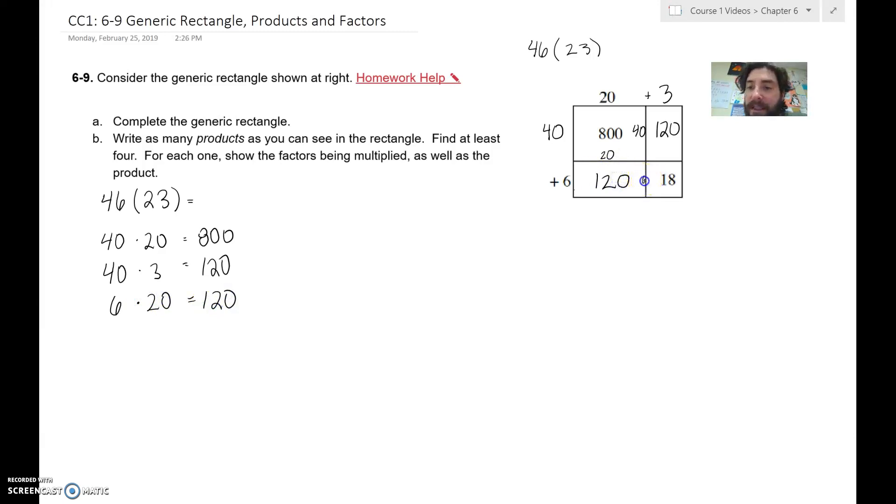And then here, this is 6 and 3, those are the factors there, 6 and 3, which is 18. So those are five products here, so five products here are the factors.